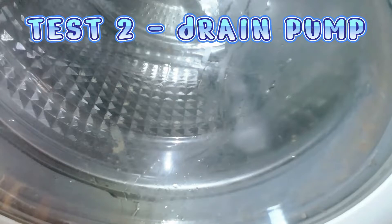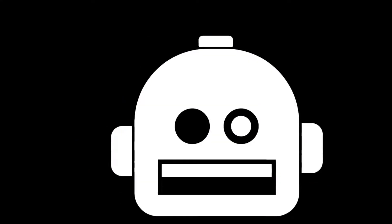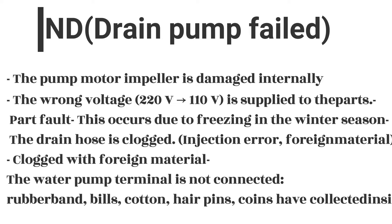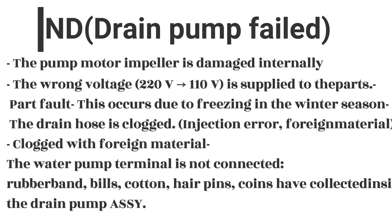Here's a list of common error codes for the drain pump. If it shows error ND, the drain pump has failed. Possible causes: the pump motor impeller is damaged internally, wrong voltage (220V instead of 110V) is supplied, part fault, freezing in the winter season, the drain hose is clogged, foreign material blockage, or the water pump terminal is not connected.